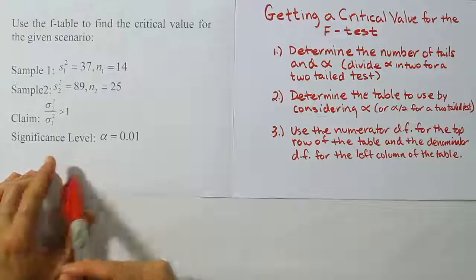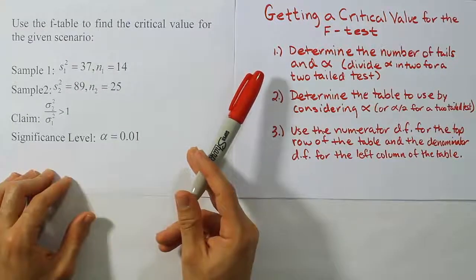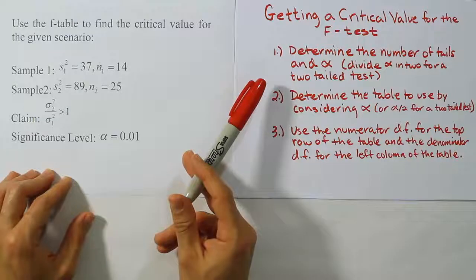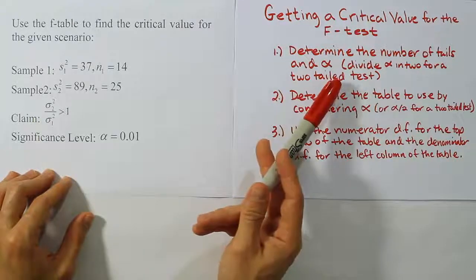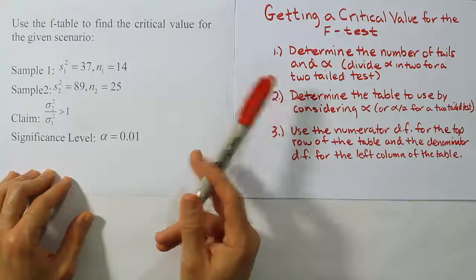Basically here's what we're going to do. We're going to determine the number of tails and alpha for the problem, and then if the problem happens to be a two-tailed test, we're going to divide that alpha by 2.